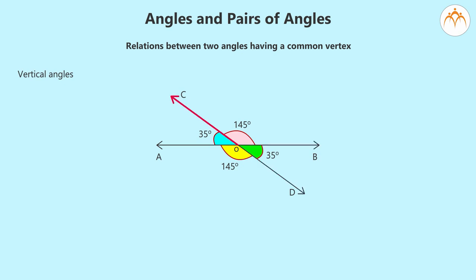Consider angle D-O-B. O-C is the opposite ray of O-D and O-A is the opposite ray of O-B. C-O-A is said to be vertically opposite angle of angle D-O-B. Similarly, angle A-O-D and B-O-C are vertically opposite angles.